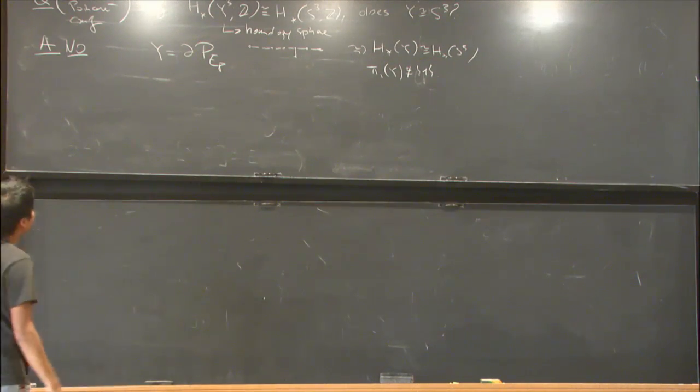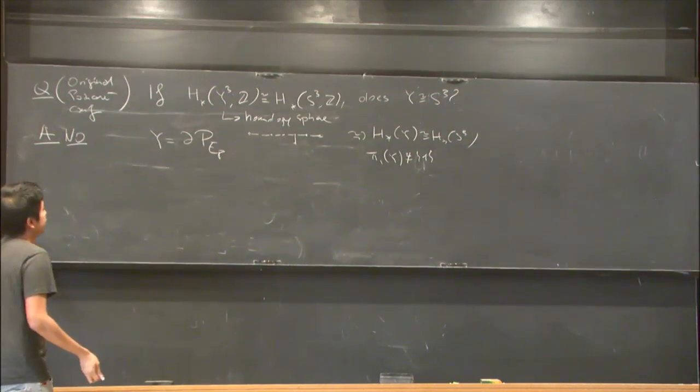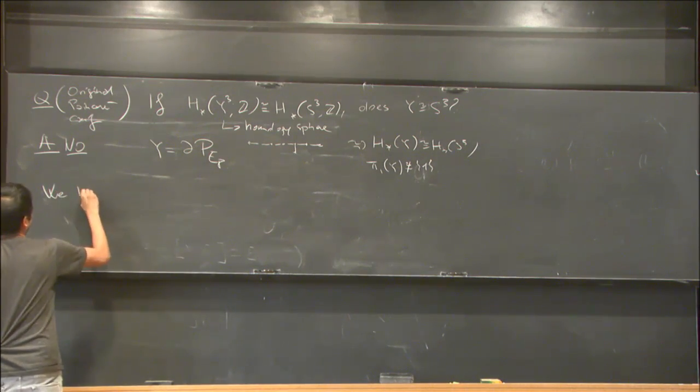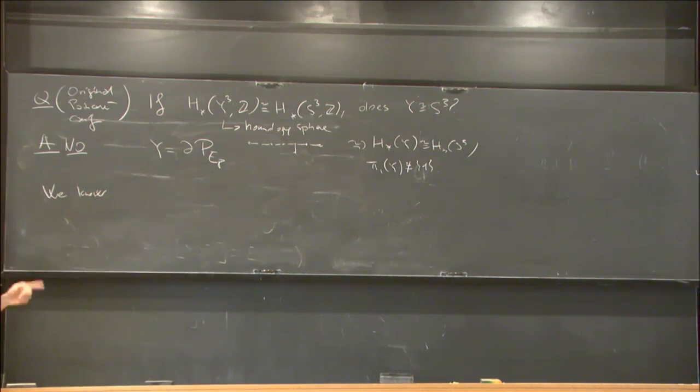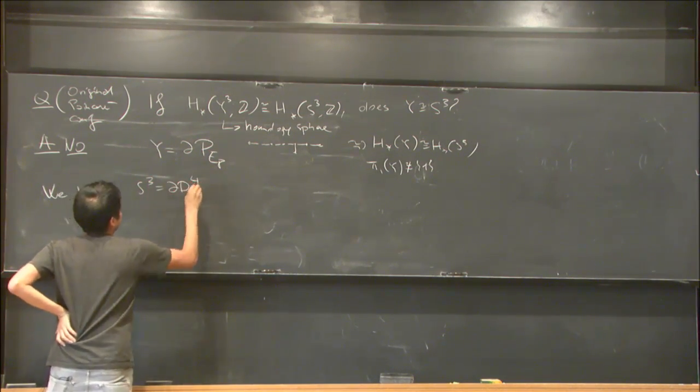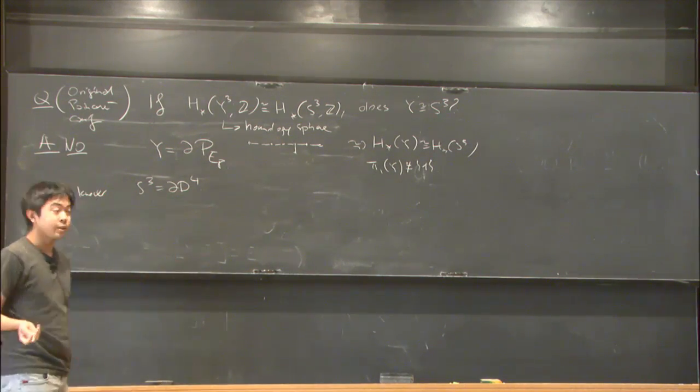The first question that comes to mind if you're a 3+1 dimensional topologist: we know that S³ is the boundary of D⁴. S³, which is the simplest 3-manifold, is the boundary of the simplest 4-manifold with boundary.